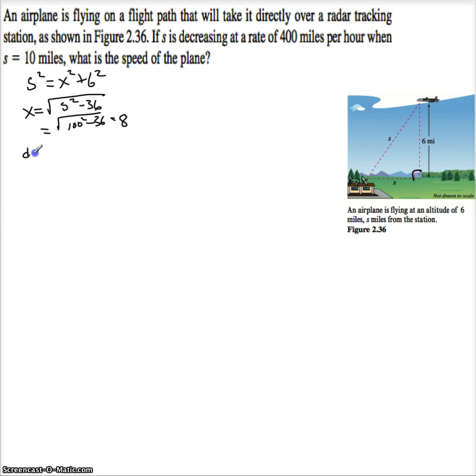Now I also know that S is decreasing at a rate of 400 miles per hour. So dS dt is minus 400 because it's decreasing. Put your units on there. And I know S is equal to 10 so I'm going to go ahead and write that down.